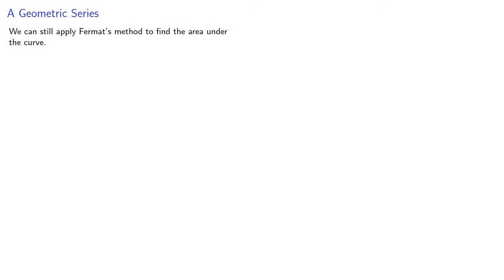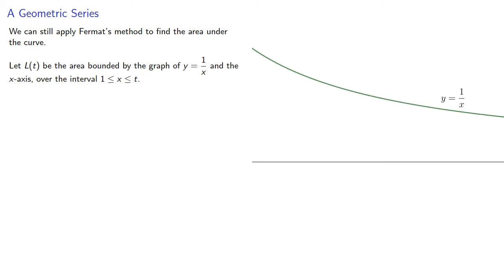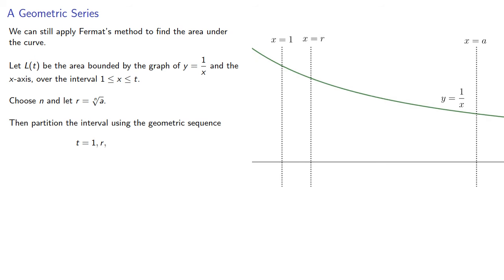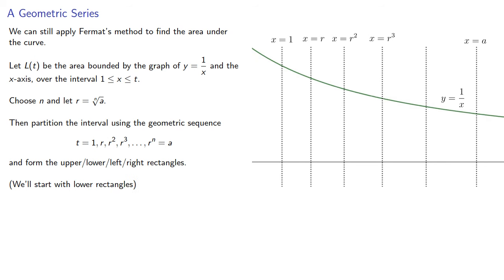We can still apply Fermat's method to find the area under the curve. Let l of a be the area bounded by the graph of y equals 1 over x and the x-axis over some interval. We'll choose some n and let r be the nth root of a, then partition the interval using the geometric sequence 1, r, r squared, r cubed, and so on up to r to the n, which will be equal to a, and then form our rectangles. We'll start with the lower rectangles.